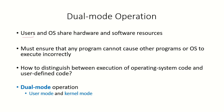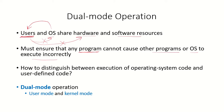The users and the operating system share the hardware and software resources of the system. While the operating system is allowed to control or access user resources, users should not be allowed to access the operating system or the resources of the system. We must ensure that any program running on the system cannot cause any other program or the operating system to execute incorrectly, and should not have access to other programs, the OS, or system resources.